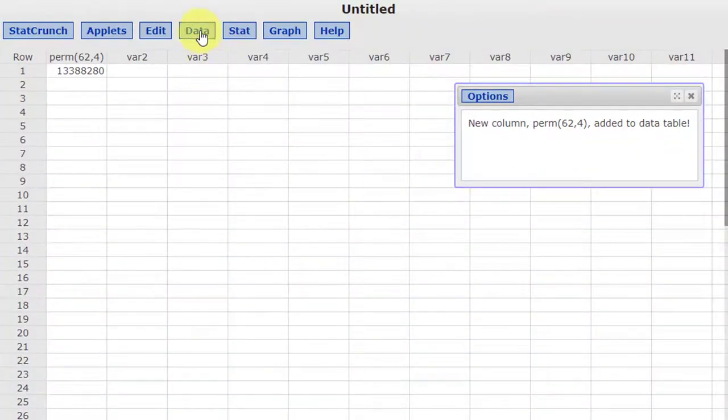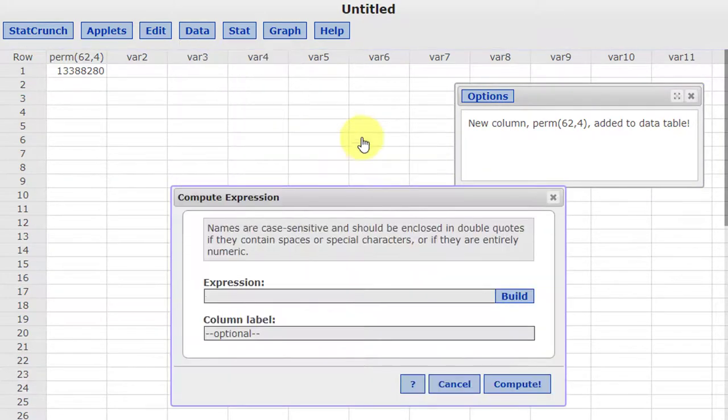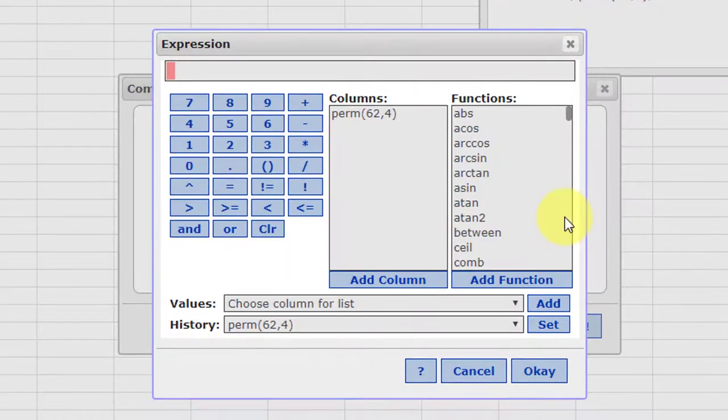Back in StatCrunch, I'm going to go back to Data, Compute, Expression, Build, and this time I want to find something that looks like combination, and there it is, COM.